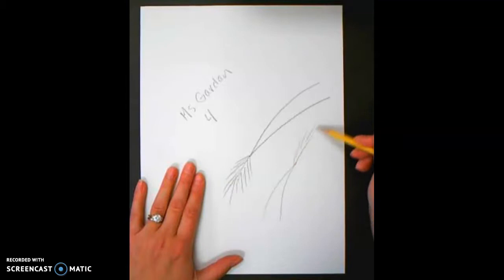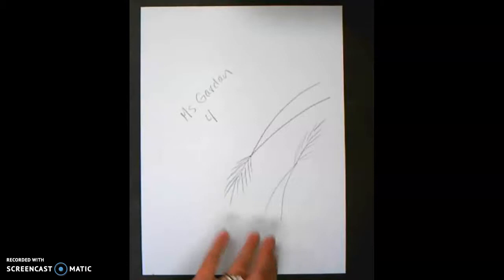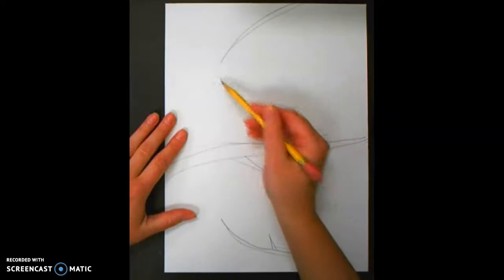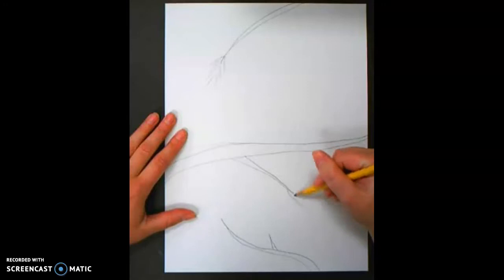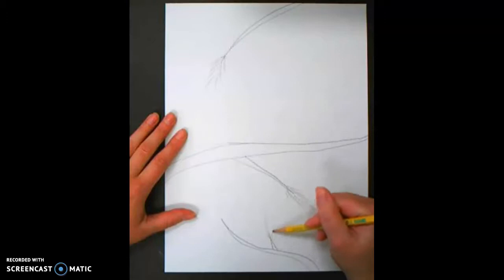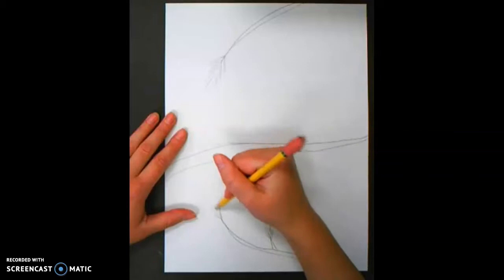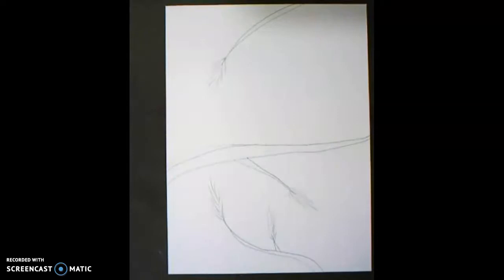When you do this, make sure you do it very lightly, because when you're coloring over top you don't want the pencil to make your greenery a little dingier. Sometimes the pencil mixes with whatever you're coloring with. So do this really, really lightly, just giving you an idea of where you're going to lay your color down, and they don't have to be perfect. Just like that. Perfect.